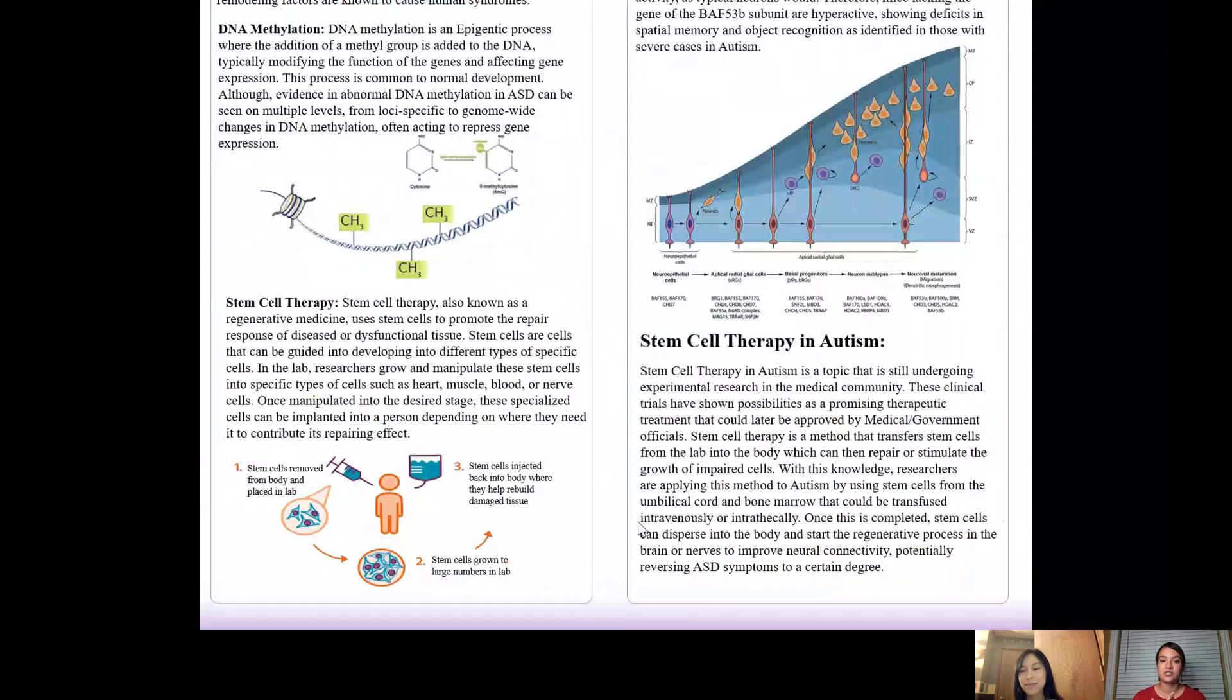These stem cells are then transfused intravenously, meaning through a needle, or through intrathecal delivery, which is more common for neural stem cell transfusion, which is injected into the spine to naturally disperse and begin its regenerative process to reverse ASD symptoms to a certain degree.